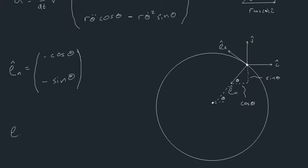For the tangential unit vector eₜ, we form another triangle, and using geometry we find the angle theta again. This gives us: eₜ equals minus sine theta in the i direction plus cosine theta in the j direction.